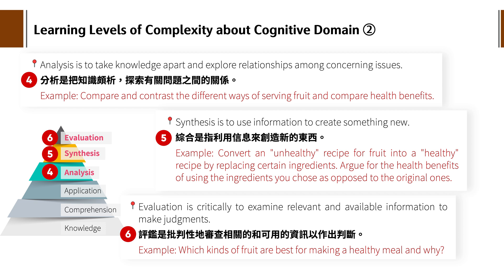第六个评鉴（Evaluation），是批判性的审查相关资讯，以可用的资讯做出判断，这个就不容易了。例子是：which kind of fruit is best for making a healthy meal and why？哪一种水果是最好的？可以去评估也可以查网络，到底吃苹果比较好呢还是吃banana比较好？